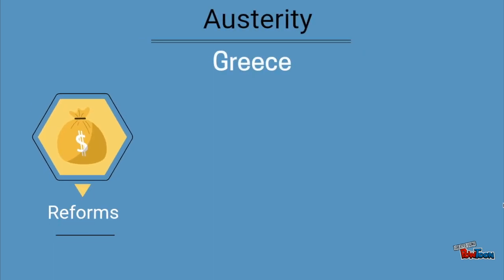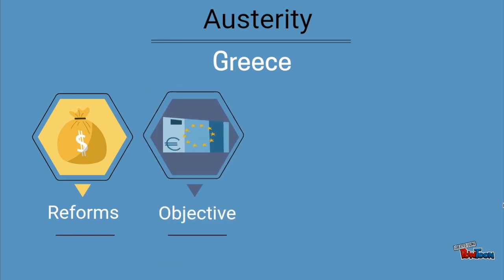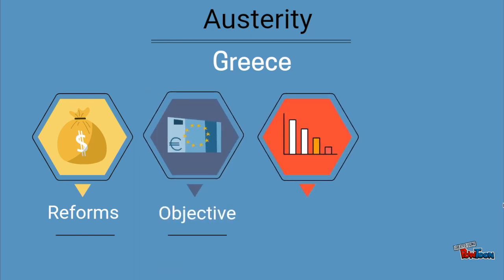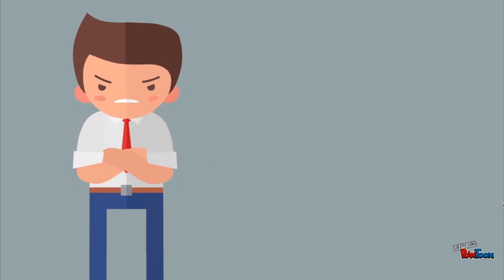Greece's third austerity package in 2010, for example, introduced cuts on public-owned companies, pension reforms and tax reforms. The objective: to save 38 billion euros in spending. The result: fiscal deficit decreased from 10% to 2.5%. And the cost: consumption plummeted, unemployment skyrocketed and the economy shrank.